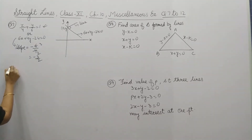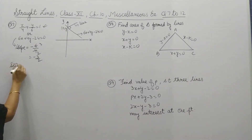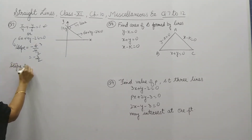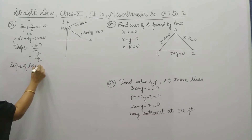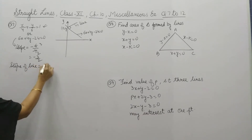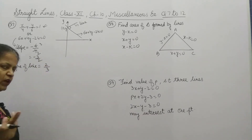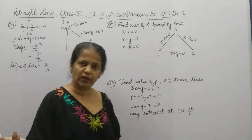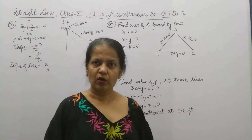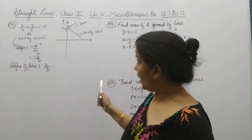Now, what should be the slope of the line whose equation we have to find? That slope is 2/3, since m1 × m2 = -1 for perpendicular lines.